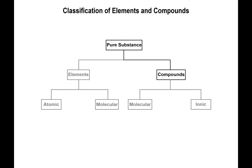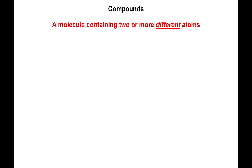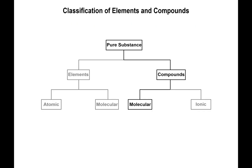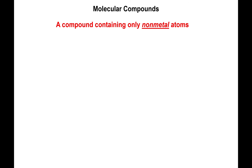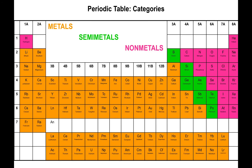Now let's look at compounds. Compounds are molecules where you have two or more different kinds of atoms together — contrasted with molecular elements that only have multiple atoms of the same kind. Looking first at molecular compounds: by definition, molecular compounds contain two or more elements of different kinds, but these elements must all be non-metals.